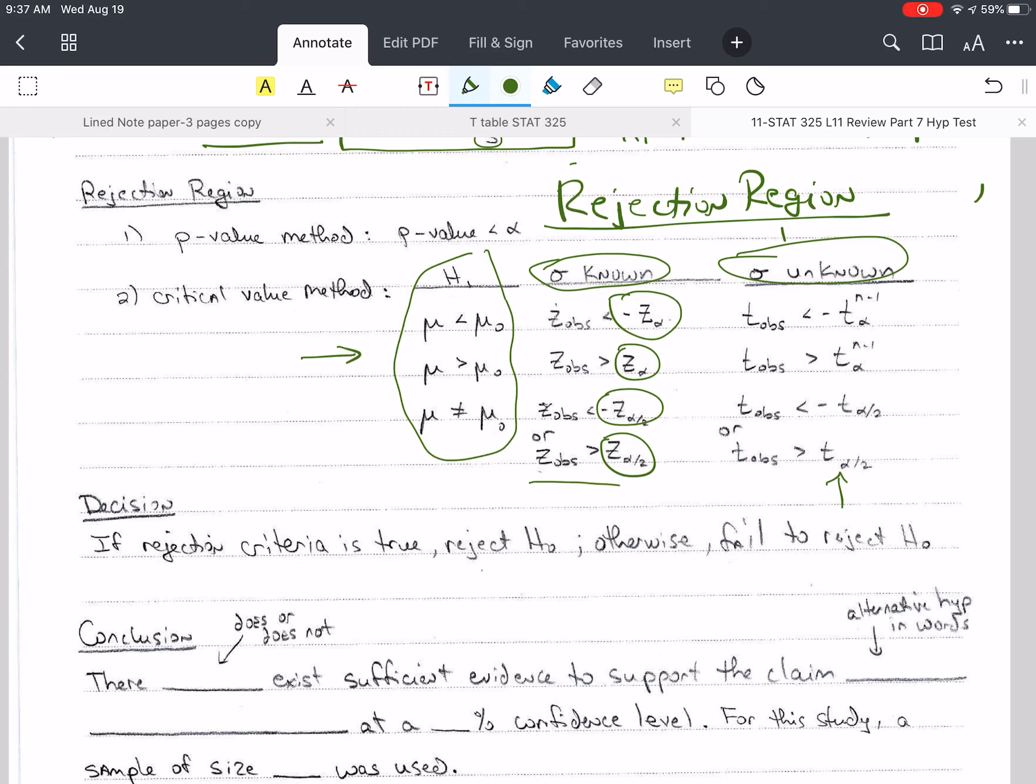So if these statements are true, then we reject H-naught in favor of H-1. Otherwise, we don't. We fail to reject. So we can have, again, if the rejection criteria is true, reject H-naught. Otherwise, we fail to reject H-naught.